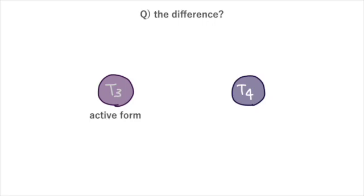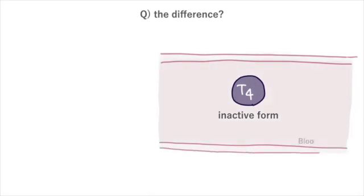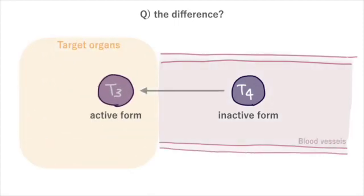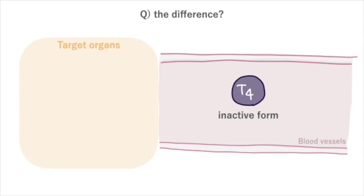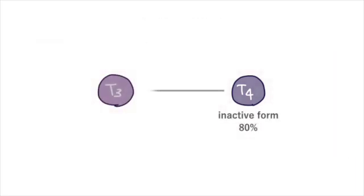T3 is the active form. T4 is inactive and converted to T3 for active use in the body. About 80% of thyroid hormones are synthesized as inactive T4. When T4 reaches target organs, it's converted to active T3 for use. This process is efficient because T3 is quickly consumed on site. Creating inactive T4 allows efficient conversion to T3 in target organs.